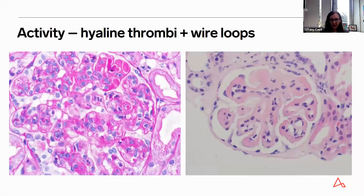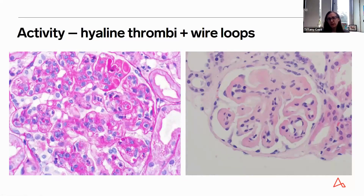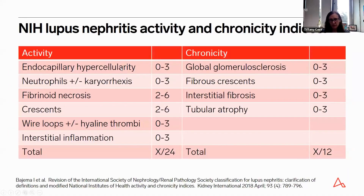Wire loops and hyaline thrombi are other evidence of activity. Wire loops within glomeruli feature massively thickened glomerular basement membranes due to the presence of subendothelial immune deposits. Hyaline thrombi, which we also typically see in cryoglobulinemic glomerulonephritis, are another feature. Overall, the activity index includes endocapillary hypercellularity, fibrinoid necrosis, crescents, wire loops, and hyaline thrombi.